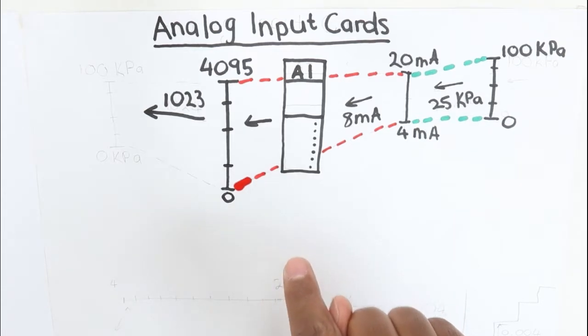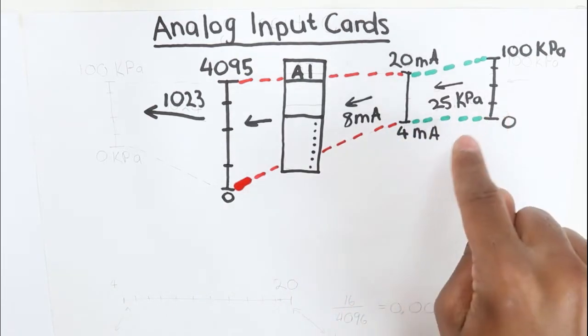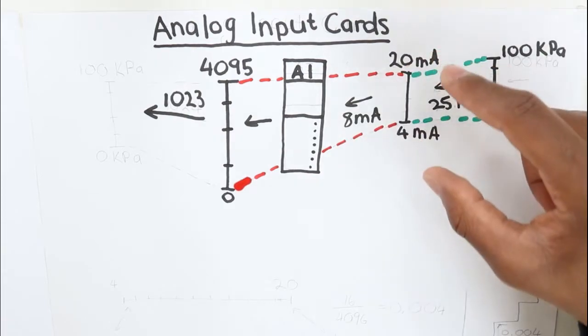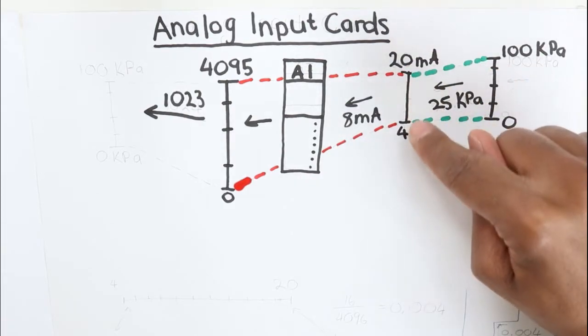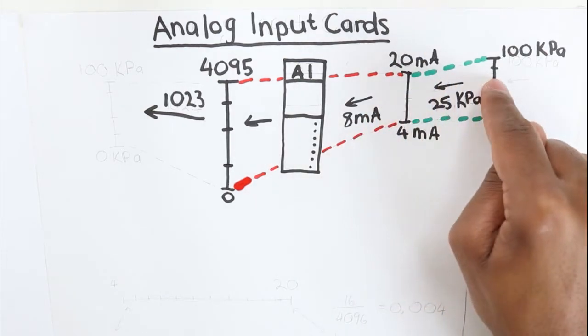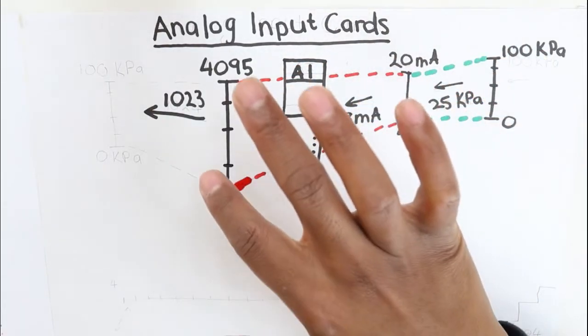It is a representation of how many bits the card has to represent this 4 to 20 milliamp values. So the more bits that you have to represent these current values in your analog to digital converter, the more accurate your current conversion will be.